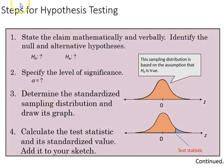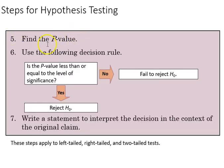To sum up the steps for hypothesis testing, we first state the claim mathematically and verbally, identify null and alternative. We specify the level of significance at alpha equals question mark. We determine the standardized sampling distribution and draw its graph, and then we calculate the test statistic and its standardized value, adding it to the sketch. We then find the associated p-value, and then use the following decision rule. If the p-value is less than or equal to the level of significance, we reject H0. If it's not, we fail to reject H0. Finally, we write a statement to interpret the decision in the context of the original claim.